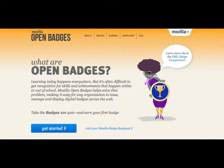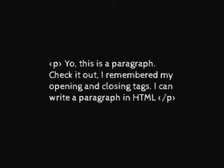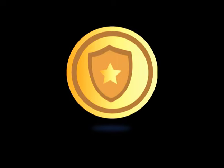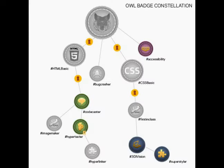A practical, albeit simplified, example of a badge might be that you are working on a Thimble project and you create three paragraphs completely on your own using correct syntax. You are then issued an HTML Paragraph Maker badge. You can then add that badge to a badge backpack, a place to store and share your achievements. Here you will also see a learning constellation slash trajectory map that will display for you based on the projects that you make and the badges that you've been awarded — a map of other things that you can do and make online to further develop your skill set.